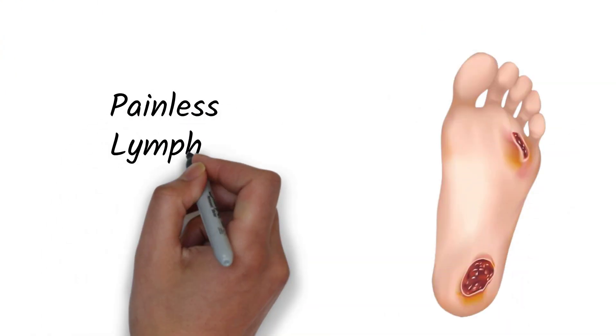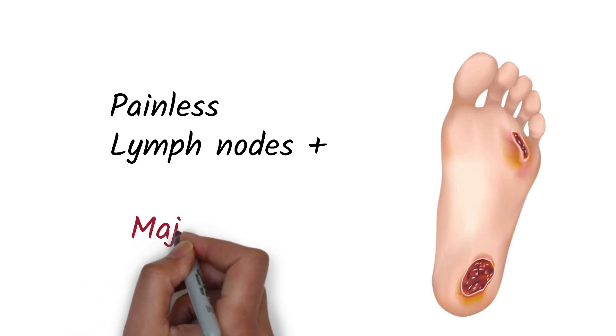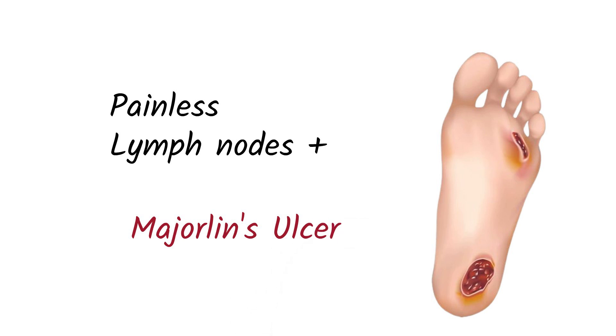Neuropathic ulcers are painless due to damage to the nerves. Lymph nodes can be palpated if the ulcer is infected, and Marjolin's ulcers can also be formed in neuropathic ulcers, just like in venous ulcers.